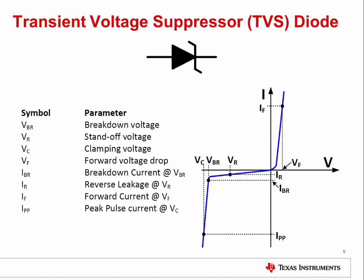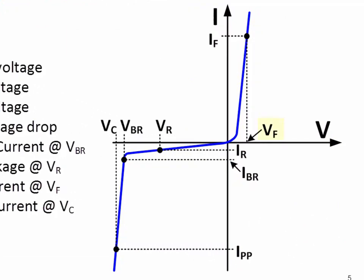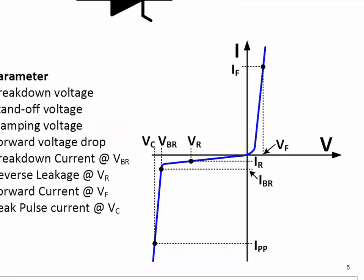One of the most common devices used to protect circuits from EOS damage is the transient voltage suppressor diode, or TVS diode. A TVS diode is similar to a Zener diode, but is designed for fast turn-on and large transient power dissipation. The IV curve shows key locations: on the right side, the forward voltage VF is defined at forward current IF. On the left side, the reverse standoff voltage VR is shown with its associated reverse leakage IR. The reverse standoff voltage is the maximum voltage which can be applied across the TVS diode for it to maintain a low leakage current — this is the off state. The reverse breakdown voltage VBR is the point at which the TVS diode starts to clamp the voltage. Finally, the clamping voltage VC is the voltage across the TVS diode when the peak pulse current IPP is flowing.